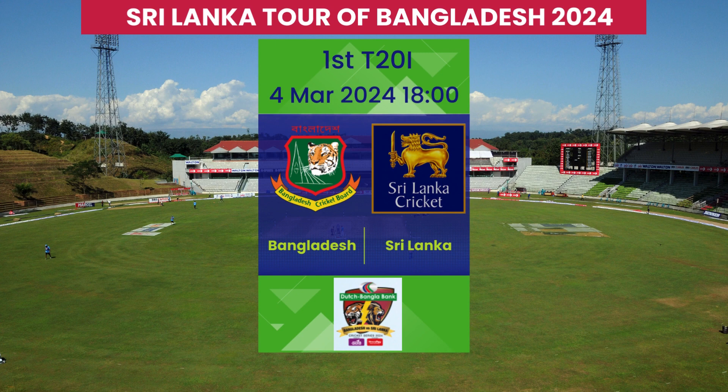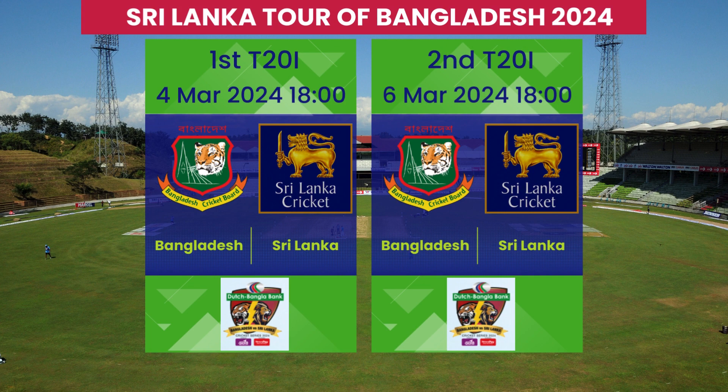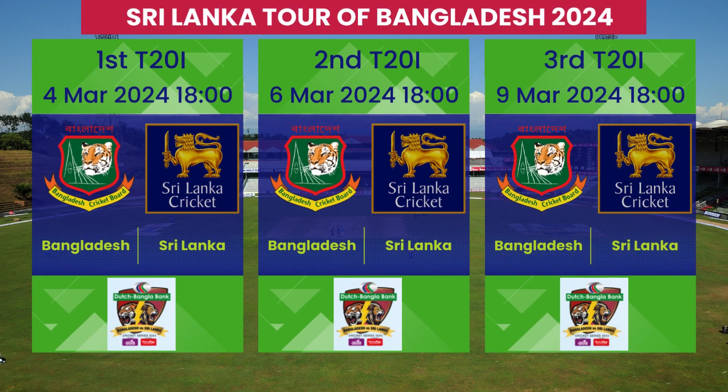The first T20 will be played on Monday 4th March at the Sylhet International Cricket Stadium, starting at 6pm Bangladesh time, which is 5:30pm in Sri Lanka and India. The second T20 follows on Wednesday 6th March, and the third T20 will be played on Saturday 9th March. Both matches also start at 6pm Bangladesh time, 5:30pm in Sri Lanka and India.